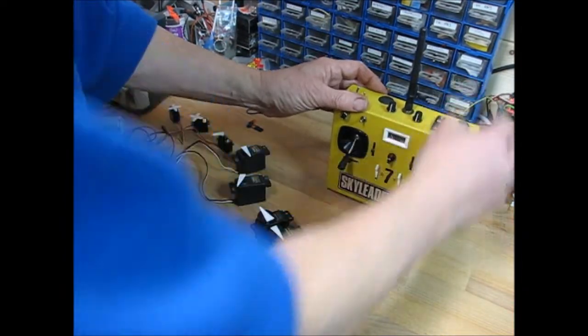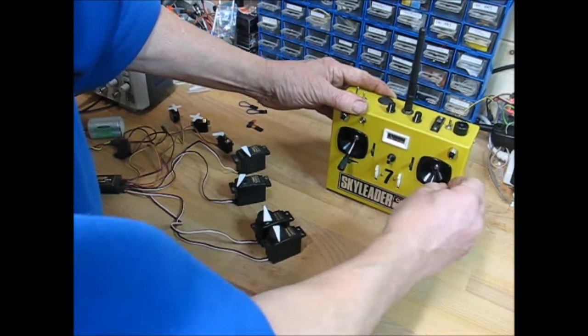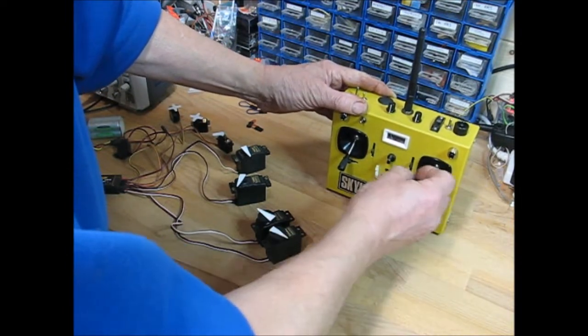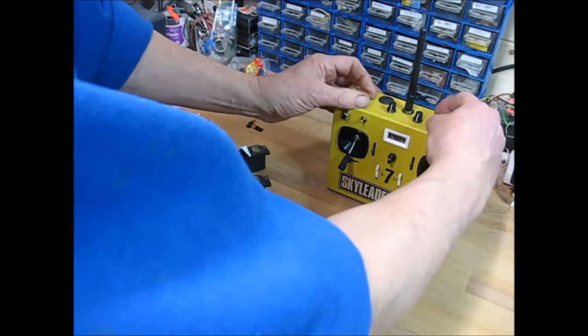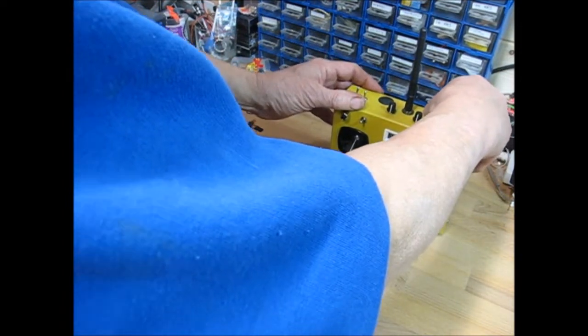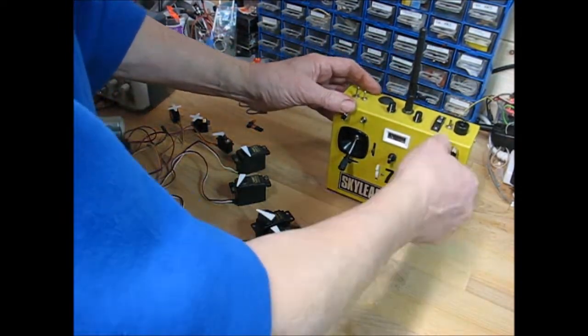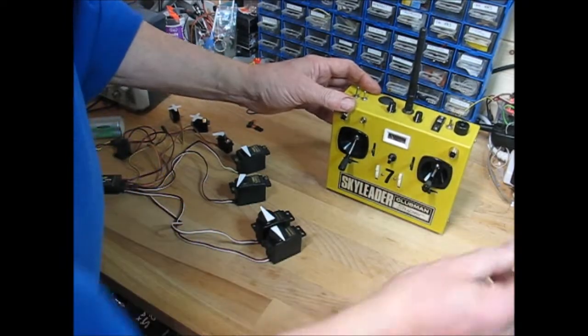And the other way is the V-tail which is the same thing but it's 50-50 so we get equal elevator and aileron movement for a V-tail. And this can only be changed by switching it off. You can't accidentally throw a V-tail mix in whilst you're flying. So we're back to normal again there.